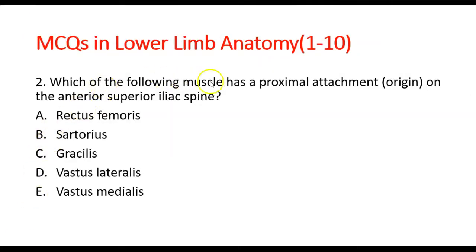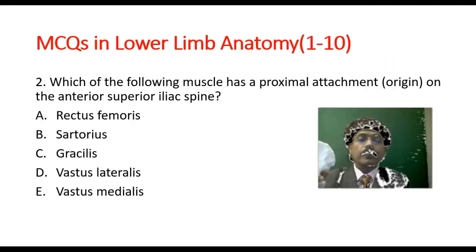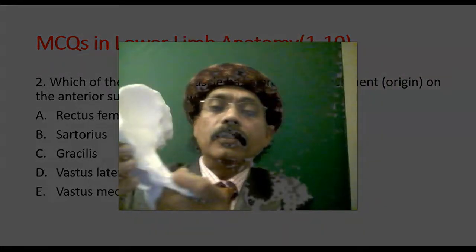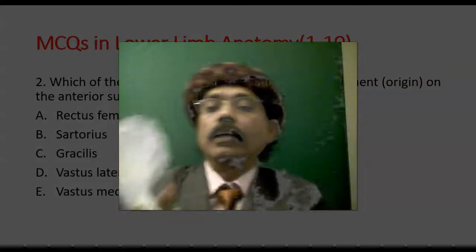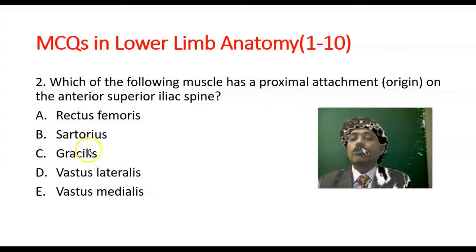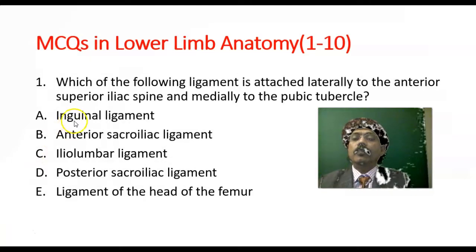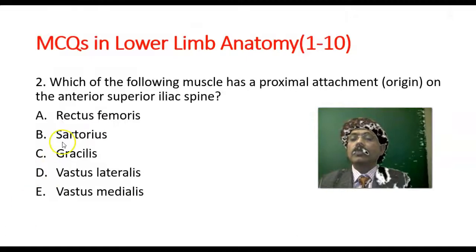Question number 2: Which of the following muscles has a proximal attachment — that is, origin — on the anterior superior iliac spine? Options include sartorius, rectus femoris, gracilis, vastus lateralis, vastus medialis. The muscle with a proximal attachment on the anterior superior iliac spine is the sartorius muscle. Answer is B.